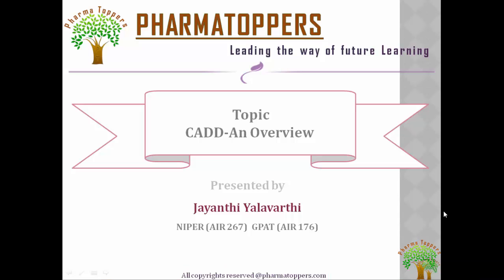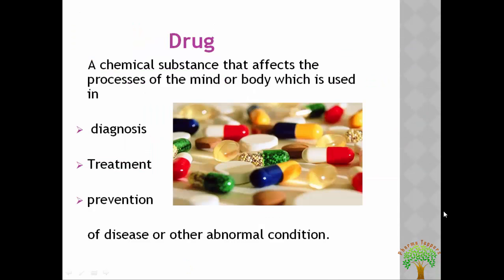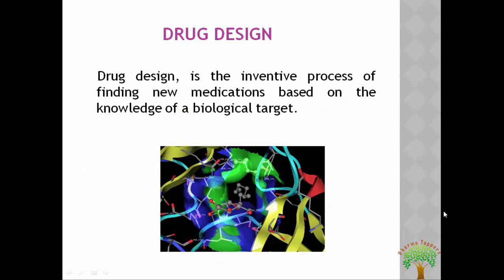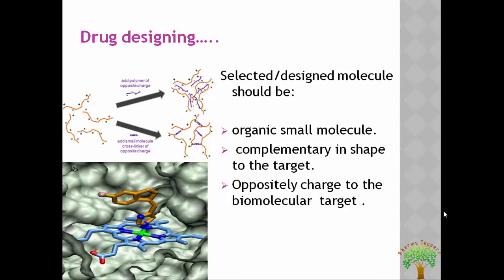In order to develop a medicine, one should have a prior idea of the drug which has to be used. A drug is a chemical substance that affects the process of the mind or the body, used in diagnosis, treatment, or prevention of disease or other abnormal conditions. Drug design is an inventive process of finding new medications based on the knowledge of a biological target, which is nothing but a receptor or protein molecule. The basic criteria for a drug molecule is that it should be an organic small molecule, complementary in shape to the target, and oppositely charged to the biomolecular target, that is the receptor molecule.